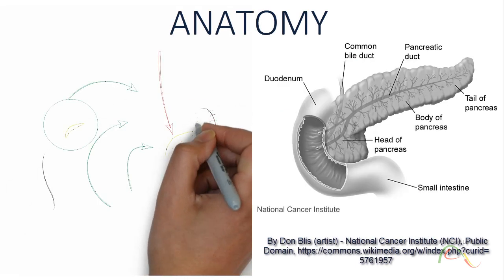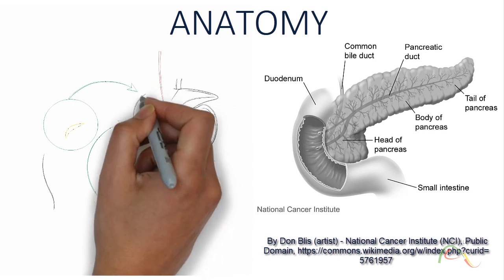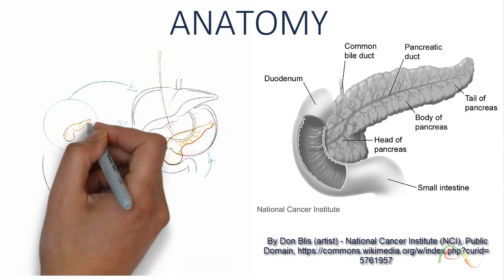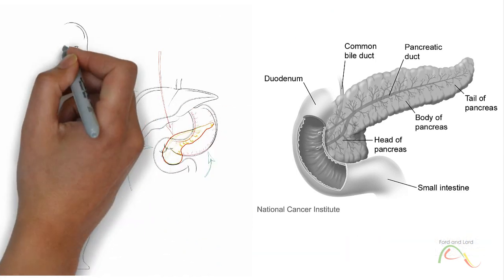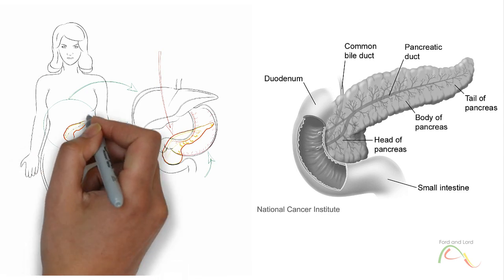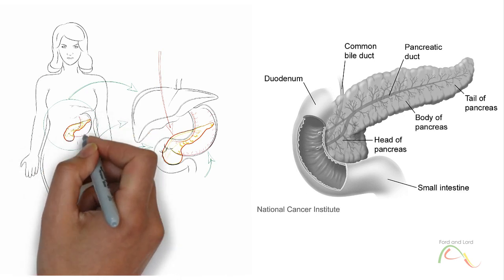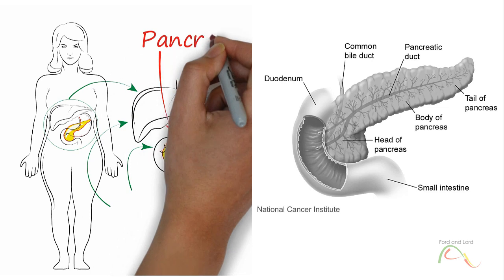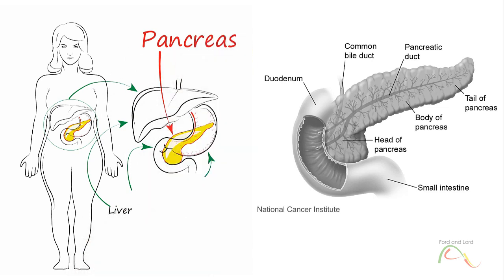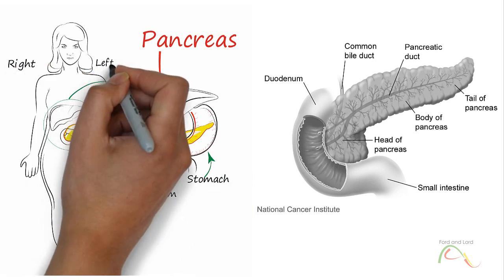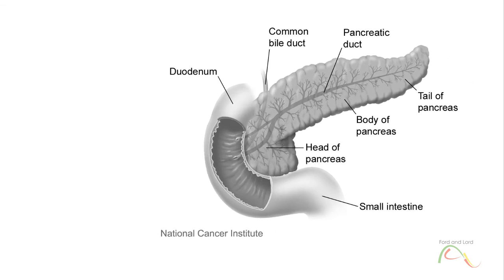The pancreas is a glandular organ which is located in the upper abdomen behind the stomach. Anatomically, the pancreas is divided into three parts: head, body, and tail. The head is located adjacent to the duodenum and the tail extends to the hilum of the spleen. With the exception of the tail, the pancreas is a retroperitoneal organ and is located in the epigastrium and left hypochondrium regions.